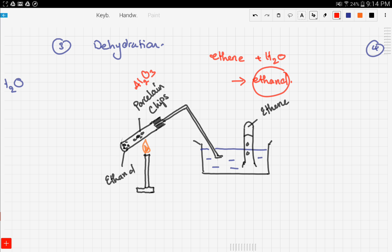The porcelain chips are aluminum oxide. We have ethanol, we heat it, then we pass the vapor and we get ethene in the test tube. Let's write this reaction. We have ethanol reacting over aluminum oxide to produce ethene (C2H4) plus water. This is just the reverse of the addition reaction.